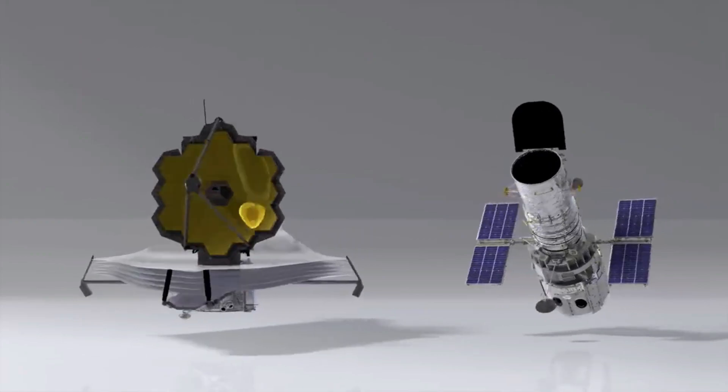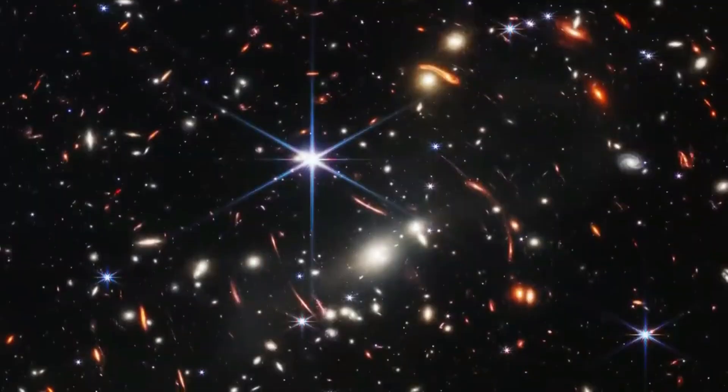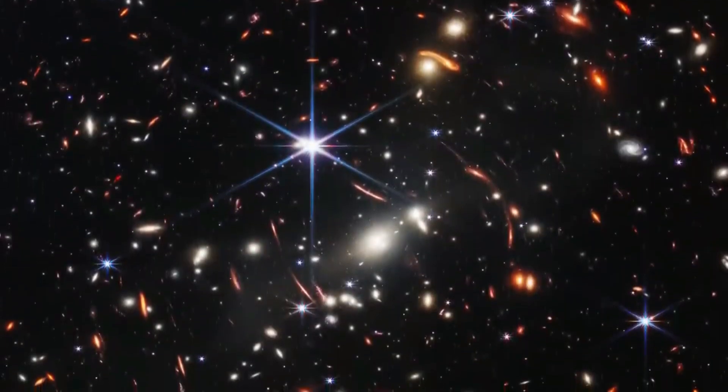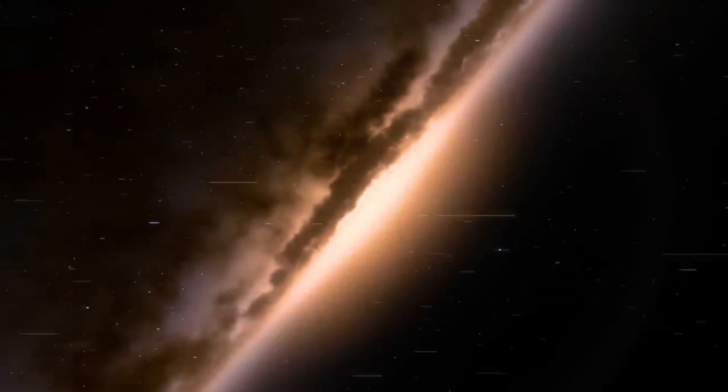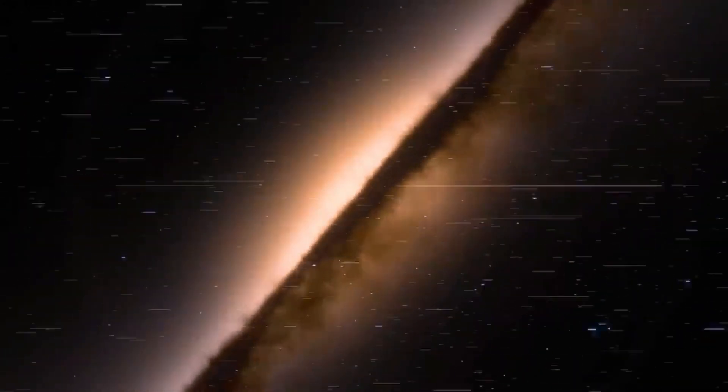Because Webb is both bigger and more sensitive than Hubble, it can pick up very faint light, and is therefore a better tool for studying the most distant galaxies. We can also get a full picture of what these early galaxies looked like, the experts said.